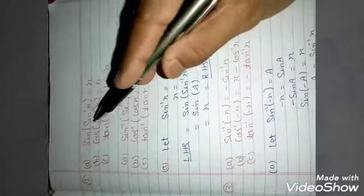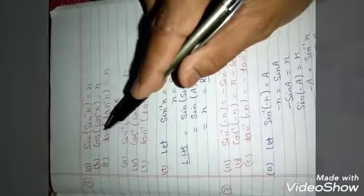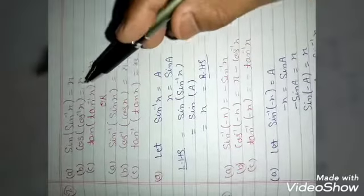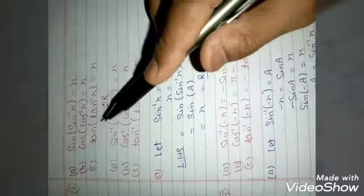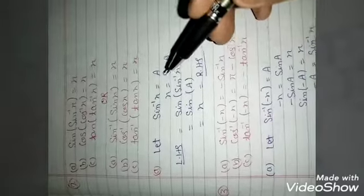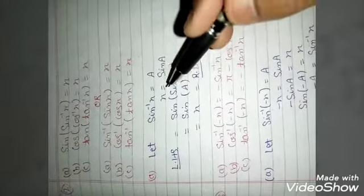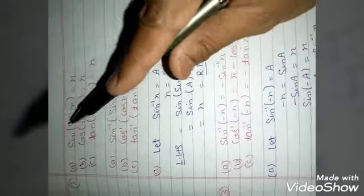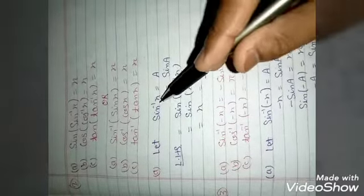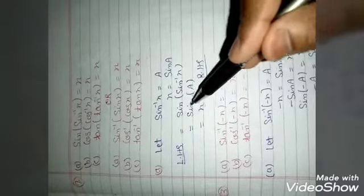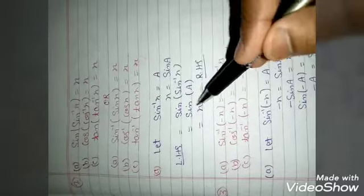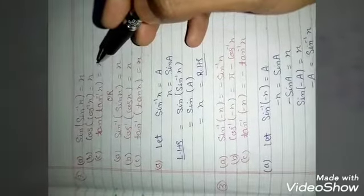Next formula: sin(sin⁻¹x) = x, cos(cos⁻¹x) = x, tan(tan⁻¹x) = x। Proof: Let sin⁻¹x = a, तो x = sin a। LHS = sin(sin⁻¹x) = sin(a) = sin a, और sin a की value x है। तो LHS = x = RHS, proof हो गया। इसी base पर बाकी दोनों भी proof होंगे।